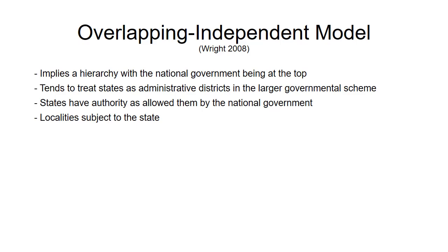On the other side, we saw three concentric circles — the overlapping inclusive model. This model implies there is a hierarchy, that the national government is supreme to state governments. It's a zero-sum game: when the national government wants more authority over some issue, that necessarily means the state or locality is losing authority. Local governments remain subservient to state governments. This model very much tells us that federalism is a hierarchical relationship.